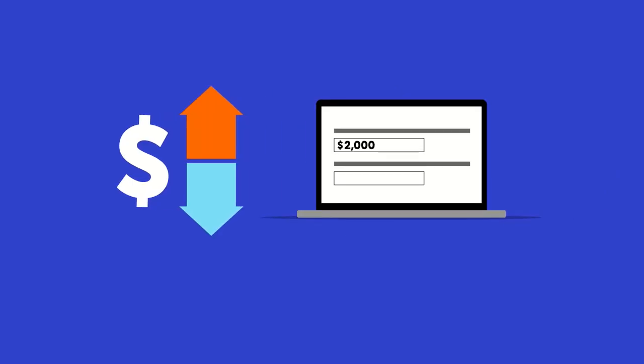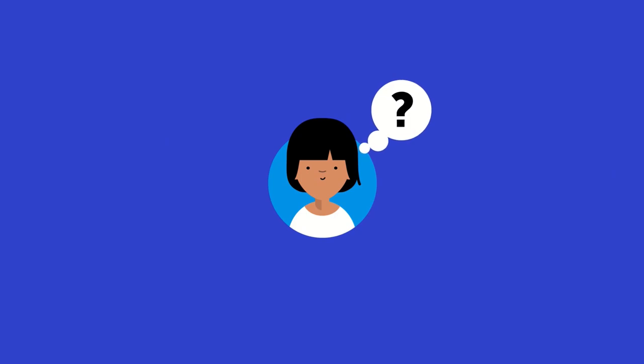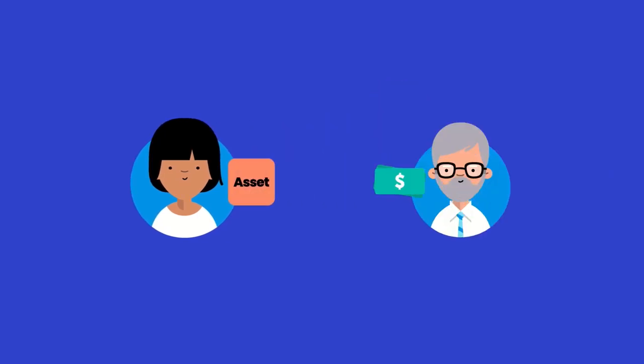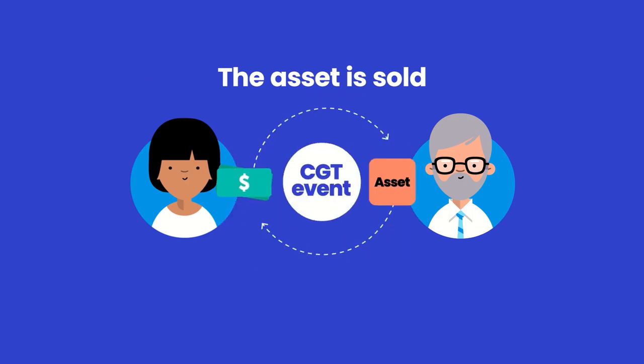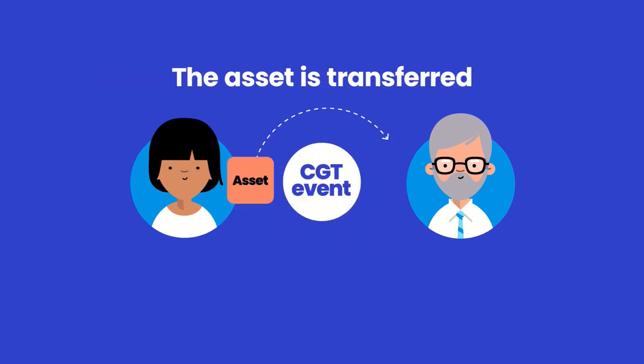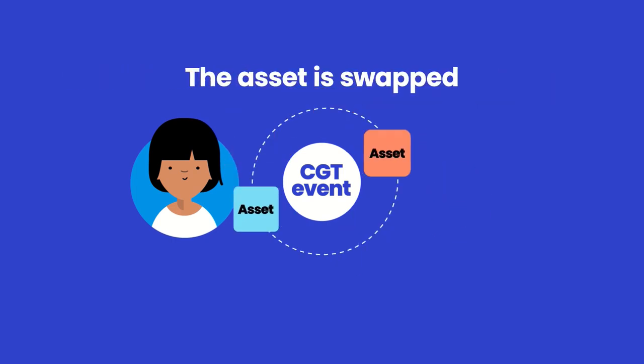But what does disposing of an asset mean? The most common disposals are when you stop being the owner of the asset. If you sell an asset, that's a CGT event. A CGT event will also happen when you transfer your asset to another owner or swap it for a different CGT asset.